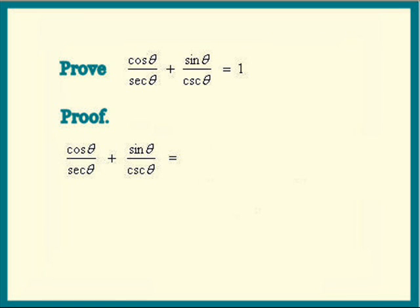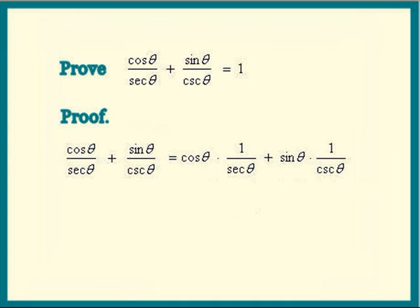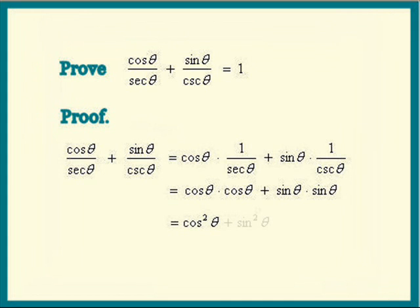Look at the first term: cosine theta over secant theta. There are many ways to do this, but I think the easier way is to pull the 1 over secant theta out to the side. We write the term as cosine theta times 1 over secant theta. Do the same with the second term — leave the sine theta alone and pull the 1 over cosecant theta to the side. Now we have cosine theta times 1 over secant theta, that is cosine theta, plus sine theta times the reciprocal of cosecant theta, which is sine theta. This becomes cosine squared theta plus sine squared theta, which is 1. We got it. Therefore, cosine theta over secant theta plus sine theta over cosecant theta is equal to 1.